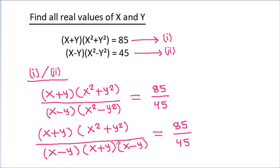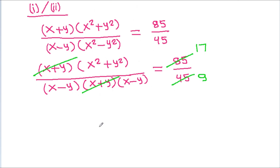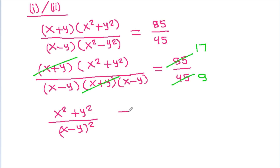Simplifying, (x² + y²) divided by (x² - y²) is equal to 85/45, which reduces to 17 by 9.